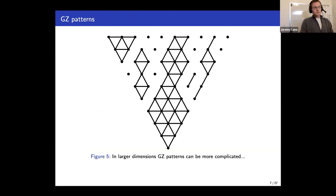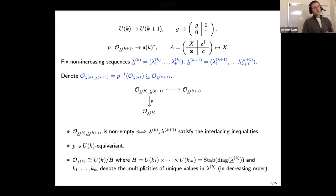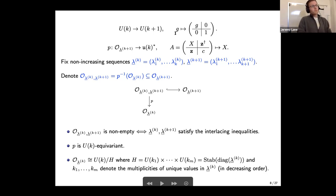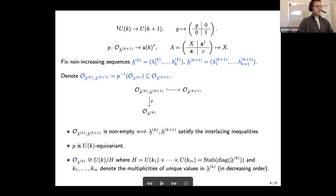Now I want to explain the tower structure of the fibers of the Gelfand-Tsetlin system. We build it inductively. Consider some k and the inclusion of U_k into U_{k+1}, sending a k×k unitary matrix to a (k+1)×(k+1) matrix. There's a dual projection from the coadjoint orbit in U_{k+1} to Hermitian k×k matrices, sending a matrix A with a Hermitian k×k block X and real scalar C to X.